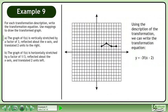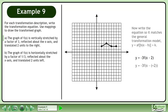Using the description of the transformation, we can write the transformation equation y equals negative 3 times f of x minus 2. Now write the equation so it matches the general transformation model y equals a times f of b x minus h plus k. On the right side, we write x minus 2 as x minus positive 2 so it matches x minus h in the general model.